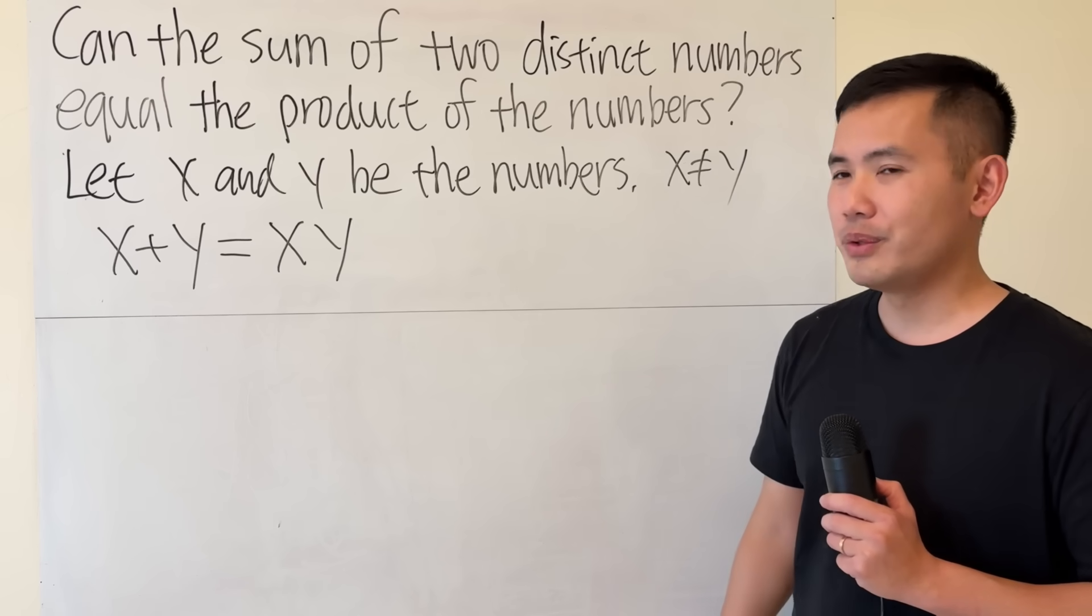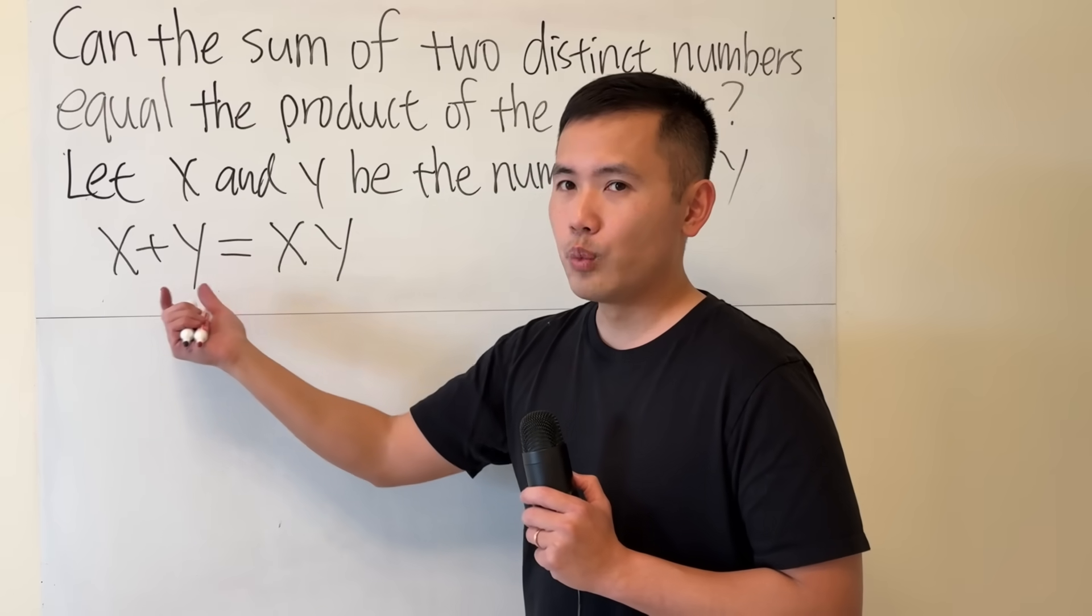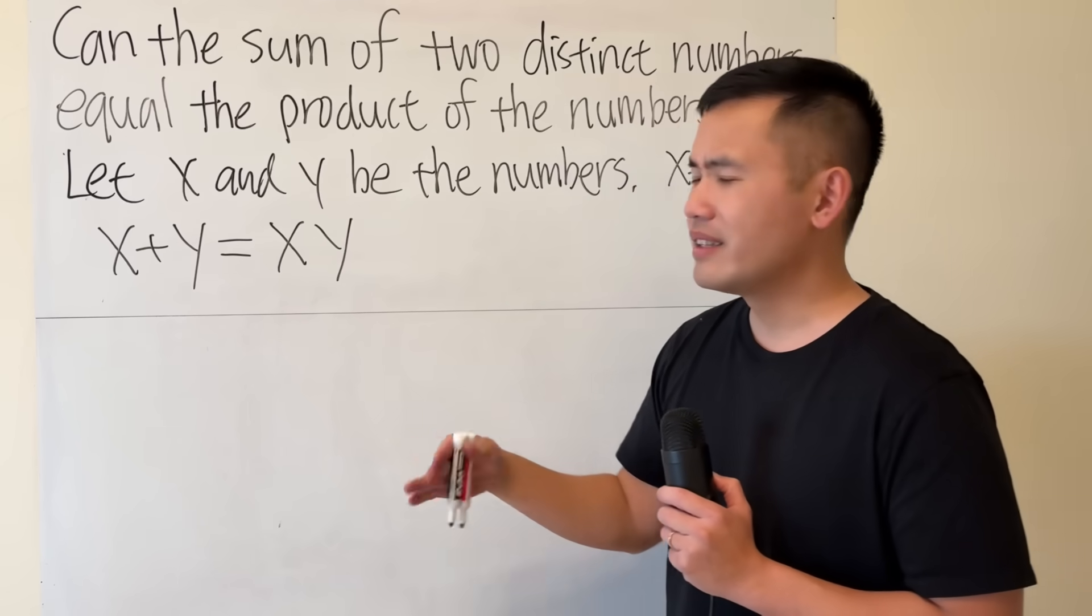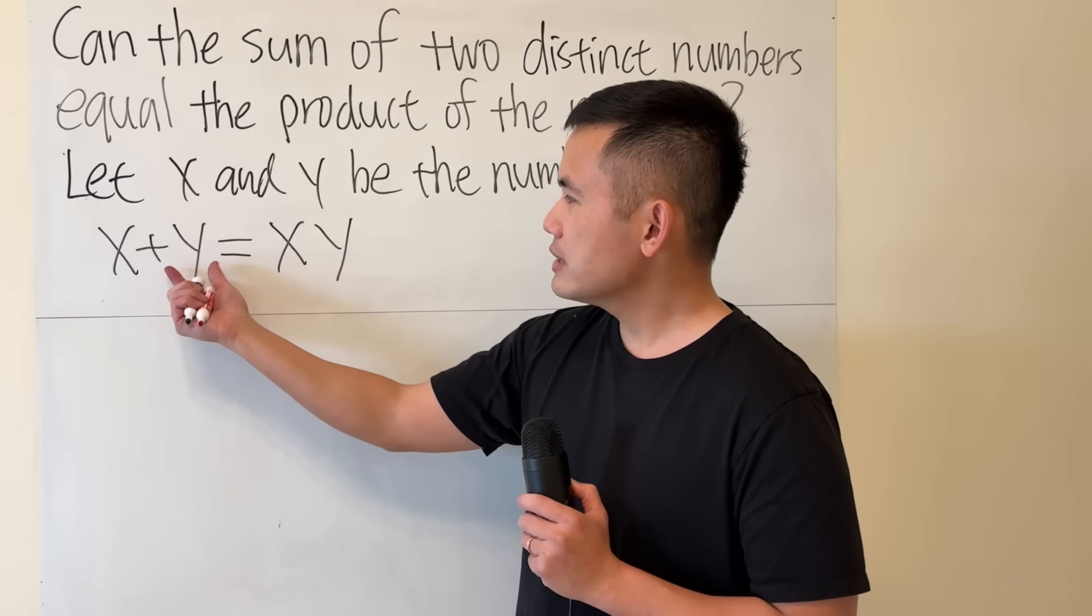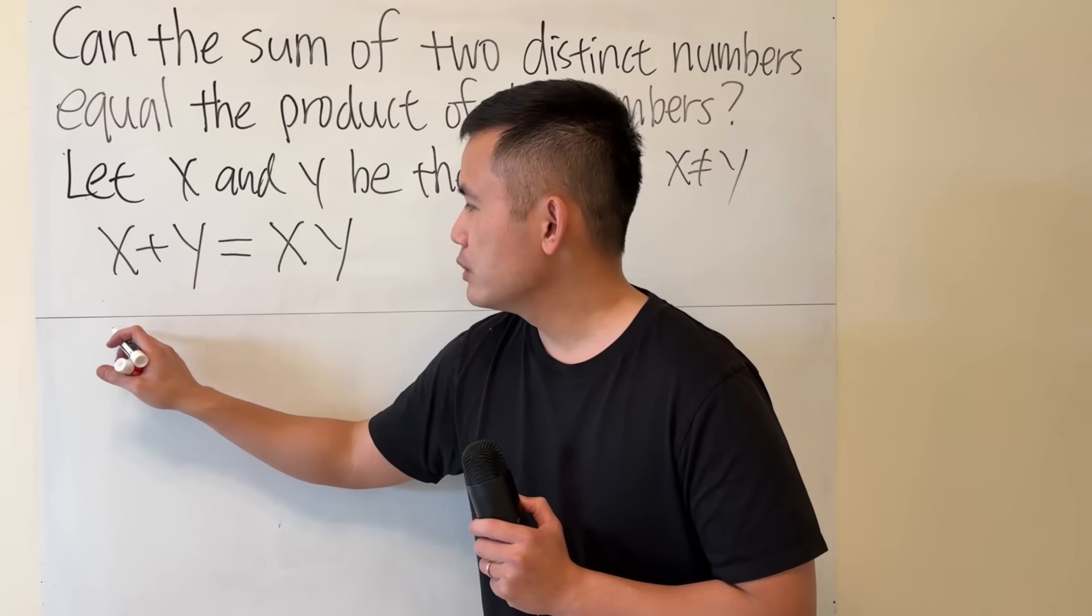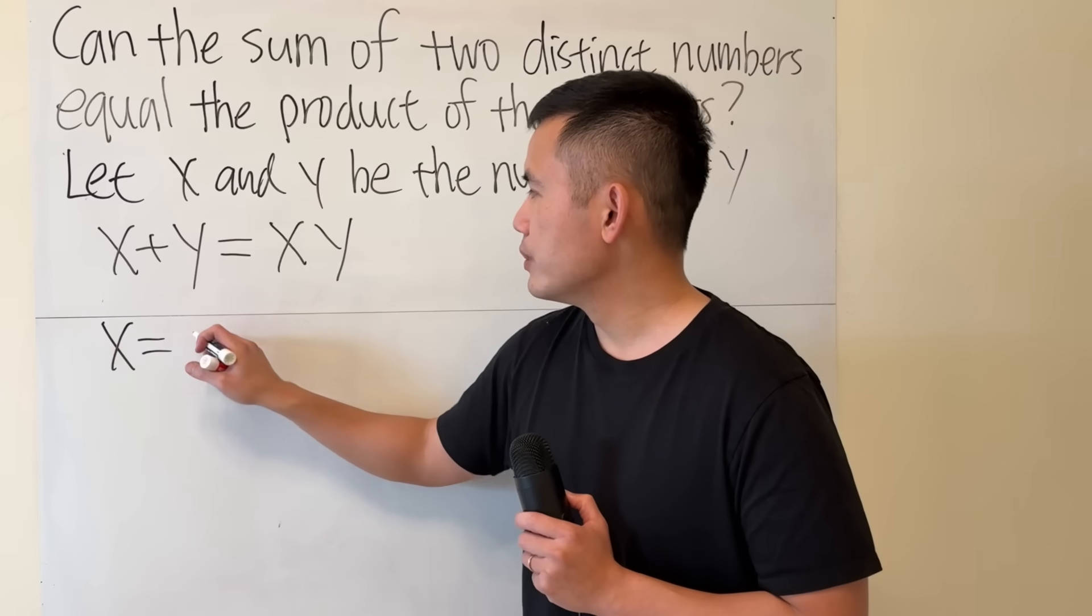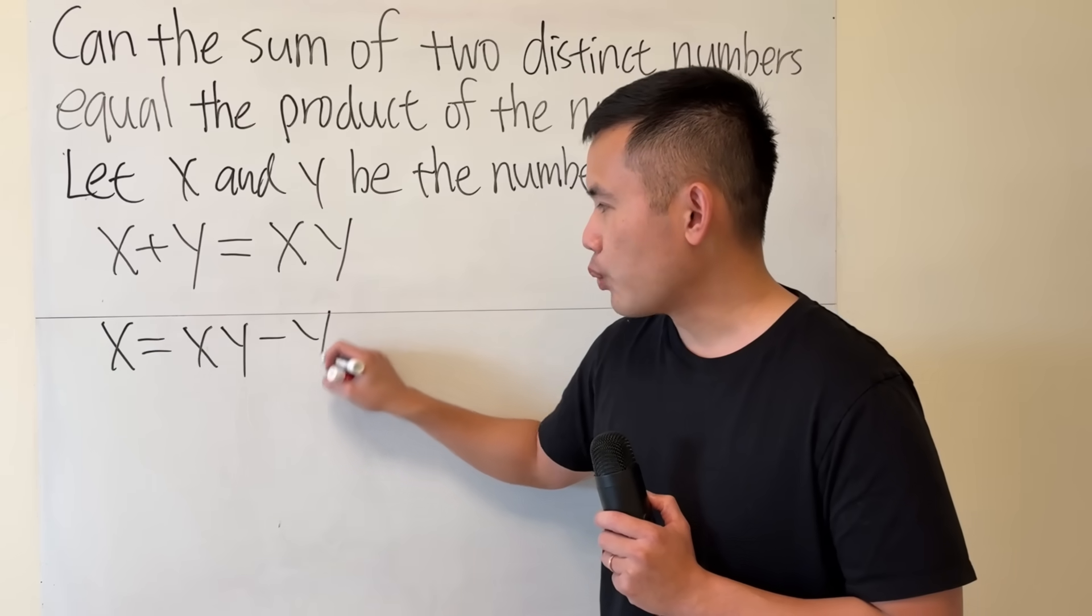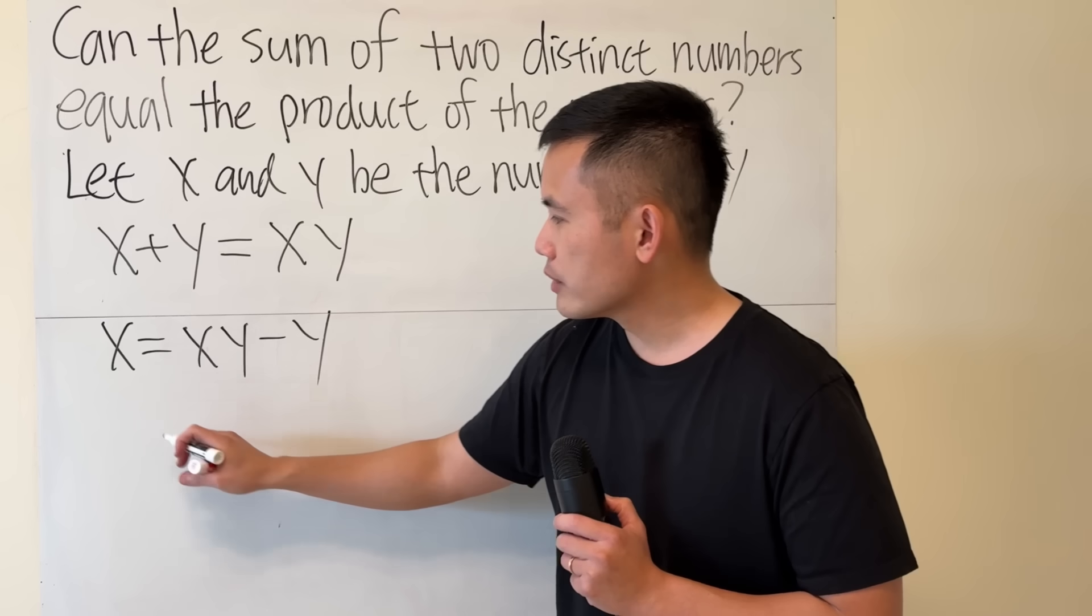So how can we continue? Well, I'm going to isolate one of the variables, x or y doesn't matter. Let me subtract y from both sides, so this tells us x equals xy minus y, and then factor out the y.